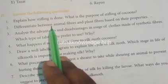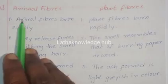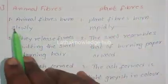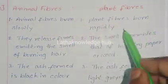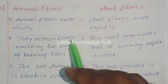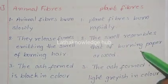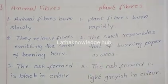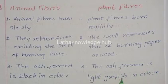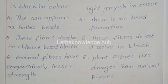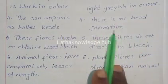Differentiate between animal fibers and plant fibers based on their properties. Animal fibers burn slowly while plant fibers burn rapidly. Animal fibers emit the smell of burning hair; plant fibers resemble the smell of burning paper or wood. The ash formed from animal fibers is black in color, while plant fibers form light grayish ash. Animal fiber ash appears as hollow beads; there is no bead formation in plant fibers.